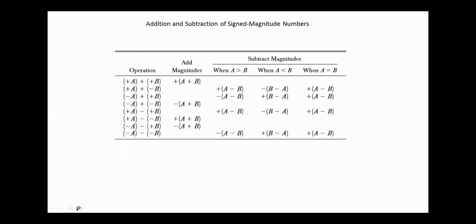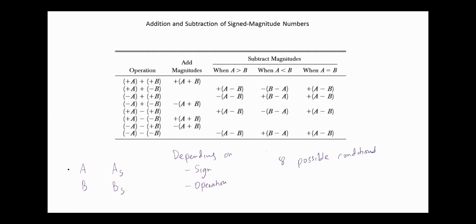We start with addition and subtraction of sign-magnitude numbers. We will designate the magnitude of the two numbers by A and B, and the sign bit for number A as AS, and for number B as BS. Depending on the sign and the operation to be performed, we have 8 possible conditions. For example, here we have the add operation and the two numbers are positive. Here, the add operation, one number is positive and the second is negative.